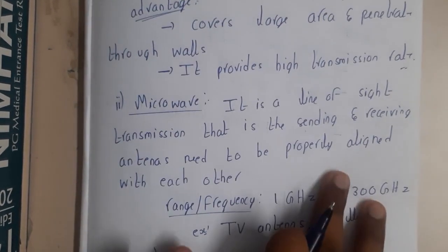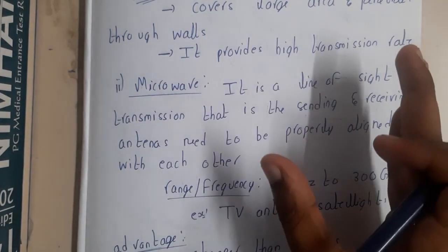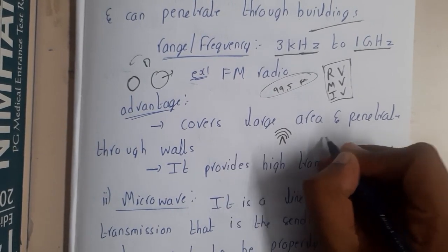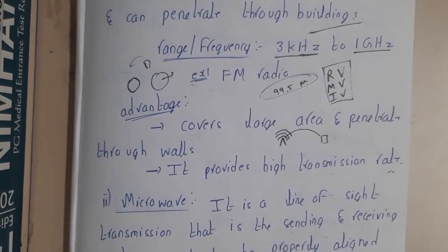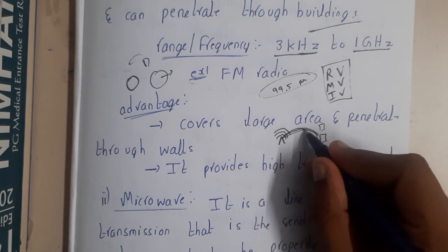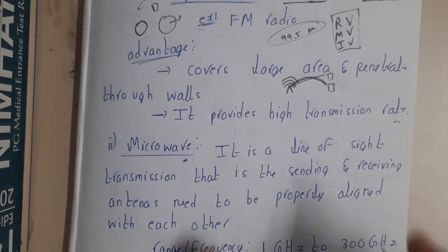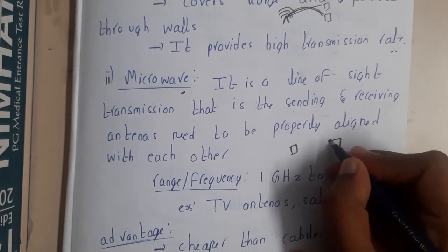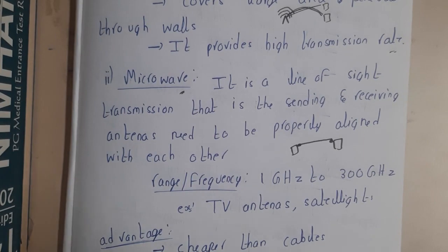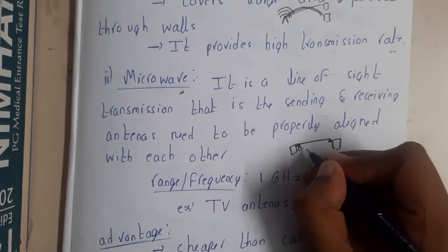Moving on to microwaves — it is a line-of-sight transmission. Radio waves transmit in all directions from a tower, so anyone around can receive the signal. But with microwaves, there should be a line of sight — the sender and receiver must be aligned straight to each other. Only then can data be sent and received properly. For this we use antennas, like TV dish antennas.